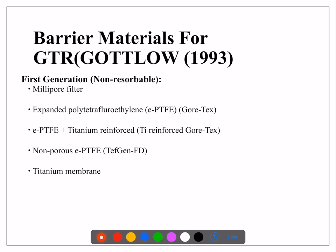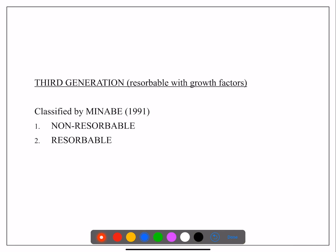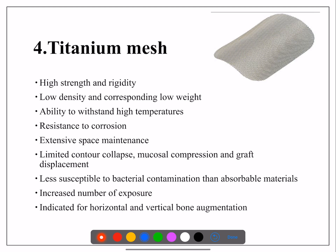GTR membranes are classified into three generations — all by Gotlow. First generation: non-resorbable, such as millipore and ePTFE. Second generation: bioresorbable — both natural and synthetic sources. Natural sources and synthetically produced materials are available. Third generation: resorbable membranes with added growth factors, introduced in 1991 — available in both non-resorbable and resorbable forms. The image shows how a collagen membrane looks, and titanium mesh — made of titanium metal — with its advantages and uses.